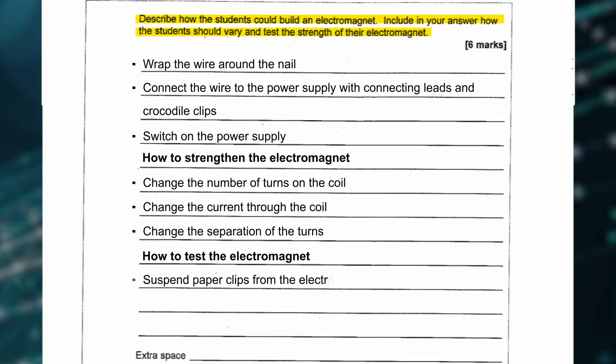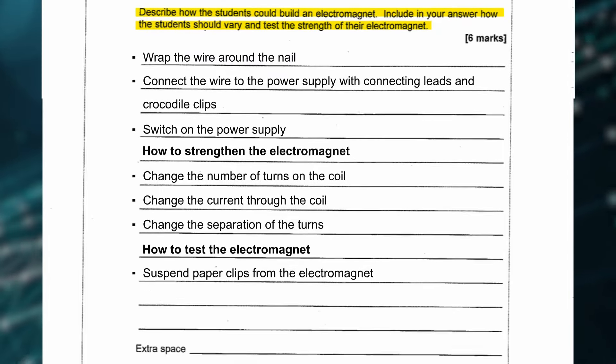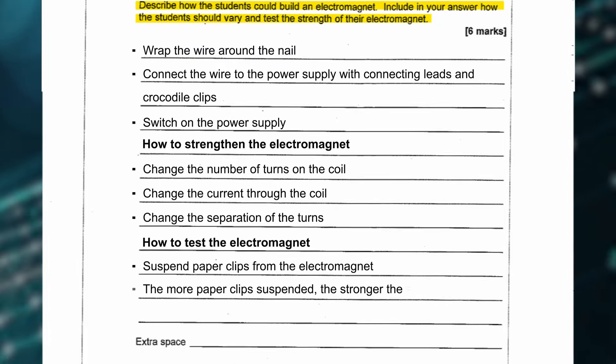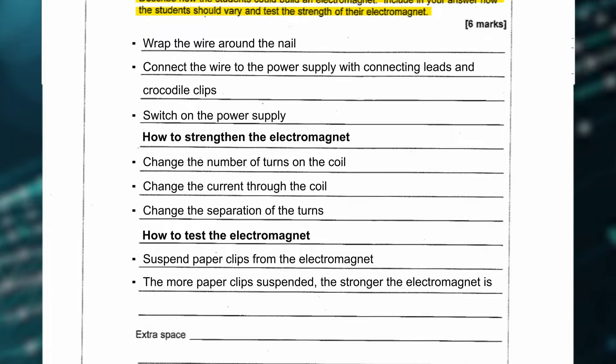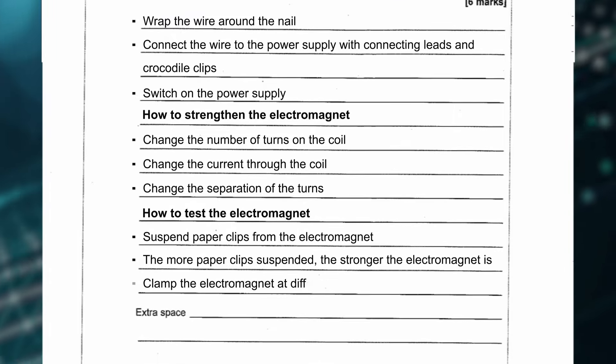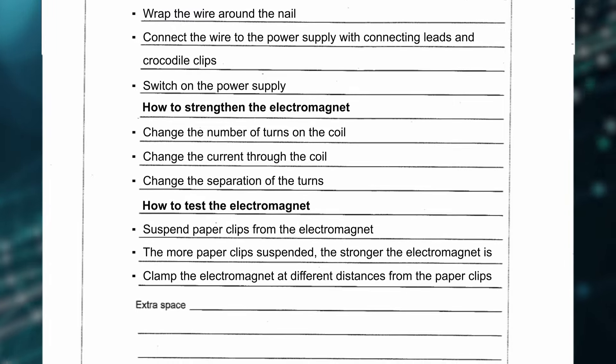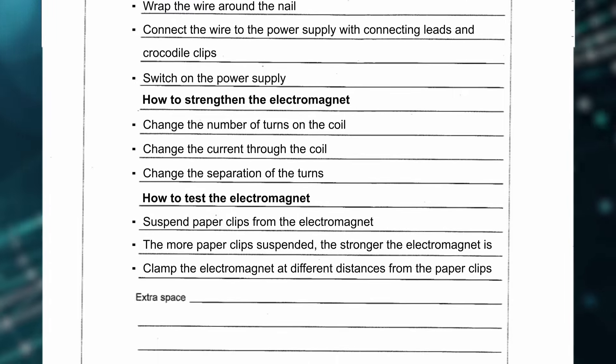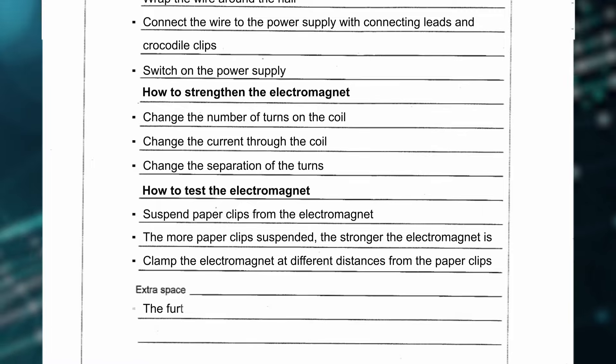For details of how to test the electromagnet, you can suspend paper clips from the electromagnet — the more paper clips suspended, the stronger the electromagnet is. You can also clamp the electromagnet at different distances from the paper clips.